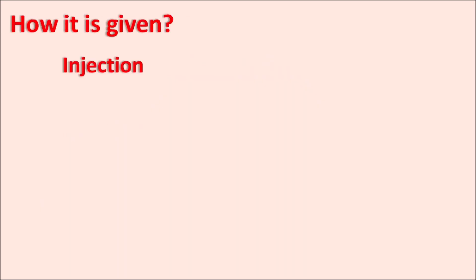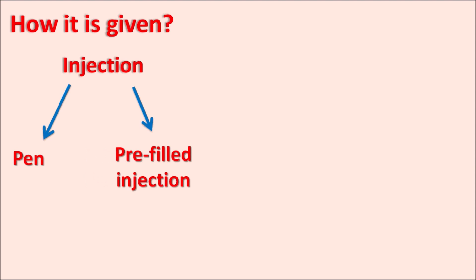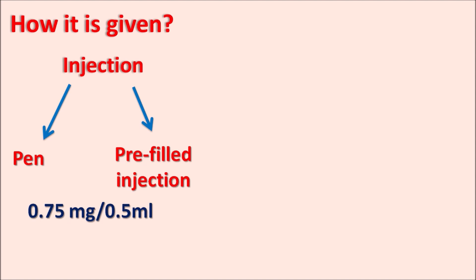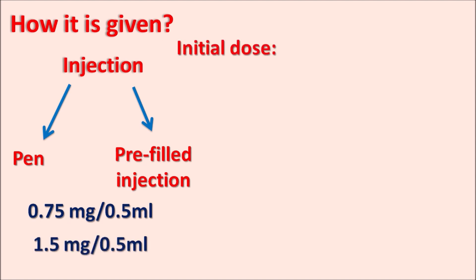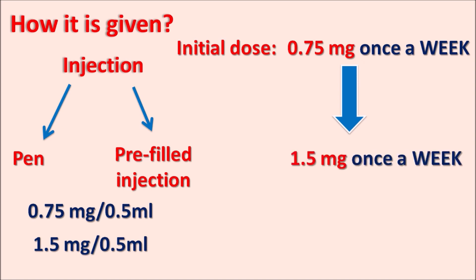This drug is given by injection and is available as a pen model and pre-filled injection. It is available at two strengths: 0.75 mg per 0.5 ml and 1.5 mg per 0.5 ml. The initial dose of Dulaglutide is 0.75 mg once a week. Based on the efficacy of treatment, the dose may be increased up to a maximum of 1.5 mg once a week.